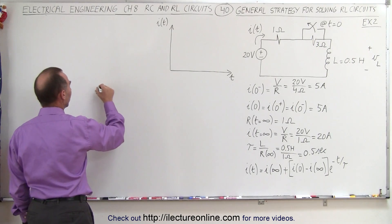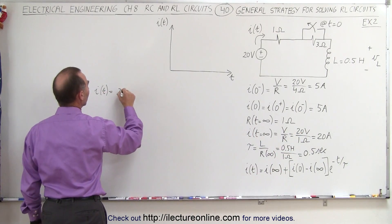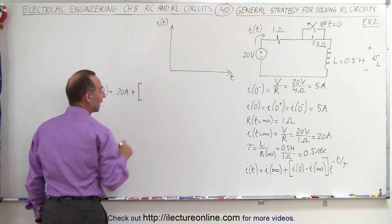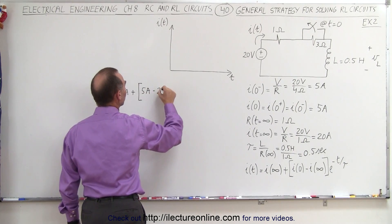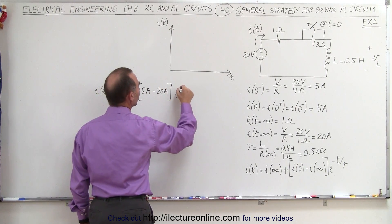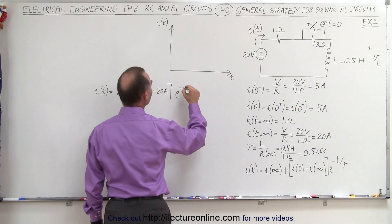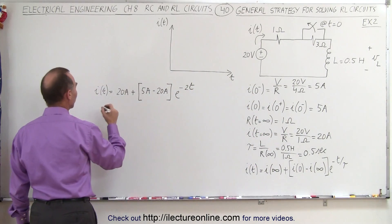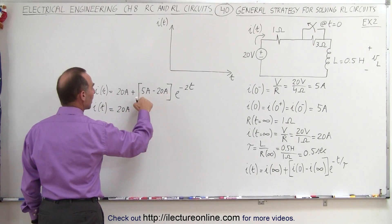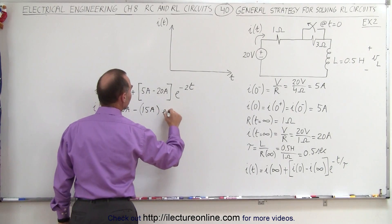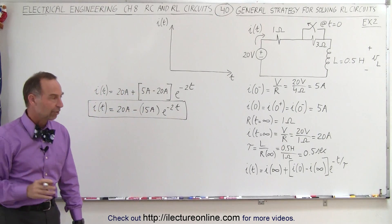The current as a function of time is equal to the steady-state current of 20 amps, plus the difference between the initial current of 5 amps and the steady-state current of 20 amps, times e to the minus t over tau. Since tau is 0.5, dividing by 0.5 gives 2, so it's e to the minus 2t. Simplifying, the current as a function of time equals 20 amps minus 15 amps times e to the minus 2t. That is the current through the circuit — which is the current through the inductor — as a function of time.